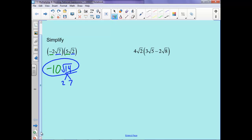So same idea here. When we distribute, we'll have 12 root 10 minus 8 root 16. And let's check, this is 5 and 2, so we can't break it down. But root 16 is 4, so this will be 12 root 10 minus 8 times 4, or 12 root 10 minus 32.